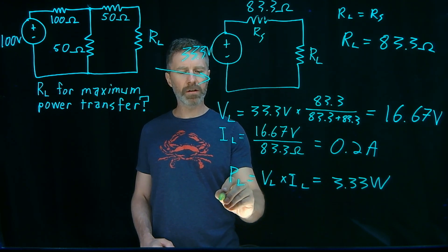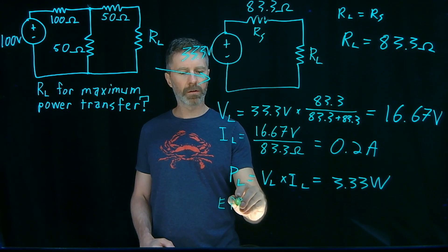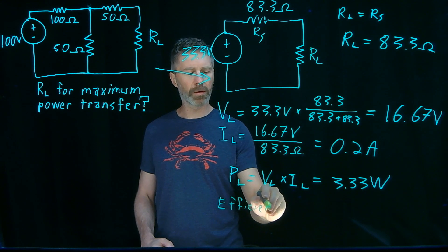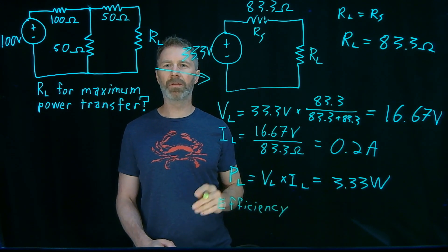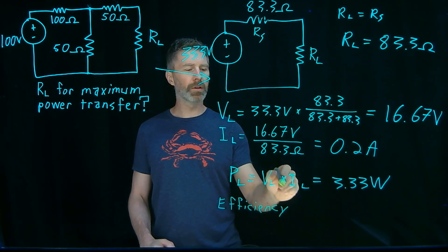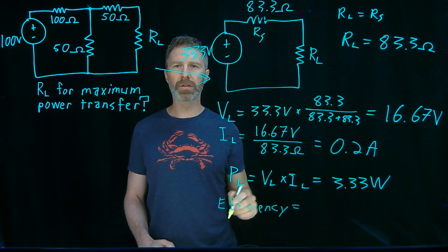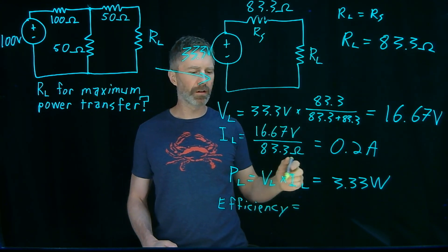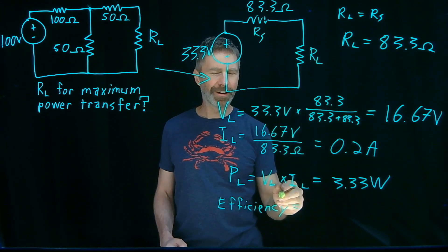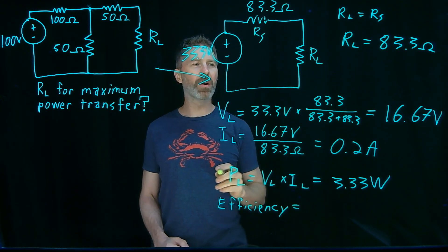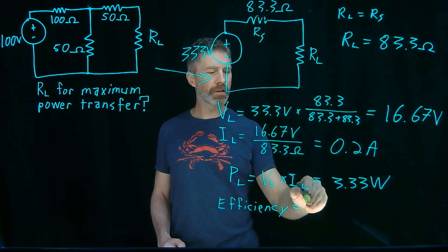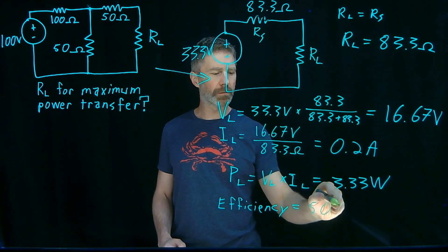Final thing. What is the efficiency? Well, we could go through the calculation and look at the power in and divide power out by power in. But we also know from previous video. Again, you can find it here. Hopefully, the card will show up. The efficiency when you have the maximum power being delivered to the load, the efficiency is 50%.